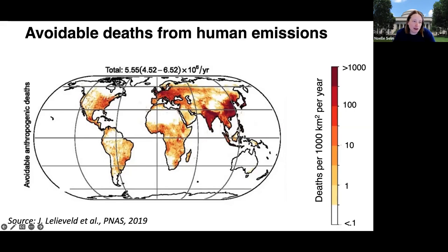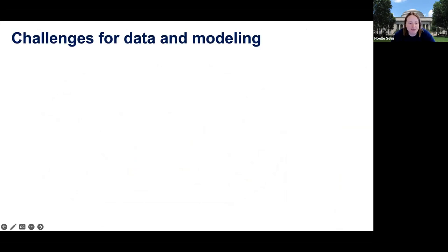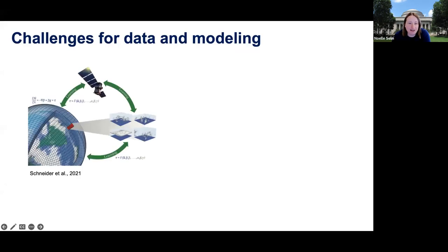Looking at this picture of air pollution mortality, it's apparent that there are areas with a high number of deaths and areas with relatively low numbers — the heterogeneity of the system is obvious. This poses challenges for data and modeling, particularly in the context of climate change. There's been much recent work setting out an agenda for how modeling, including advances in data science and computation, can contribute to sustainability challenges. This is illustrated in a paper on the frontiers of climate modeling — a schematic of how data and learning can be better integrated into simulation capacity for future climate.